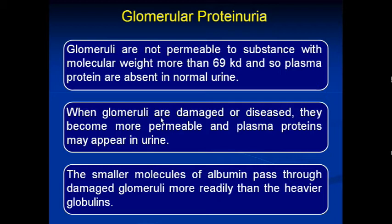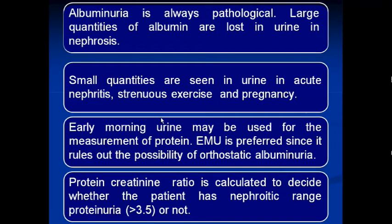Glomerular proteinuria: The glomeruli of the nephron are not permeable to substances with molecular weight more than 69 kDa or 69,000 Daltons, so plasma proteins are absent in normal urine. When glomeruli are damaged or diseased, they become more permeable and plasma proteins may appear in the urine. The smaller molecules of albumin pass through damaged glomeruli more readily, and albuminuria is always considered pathological.